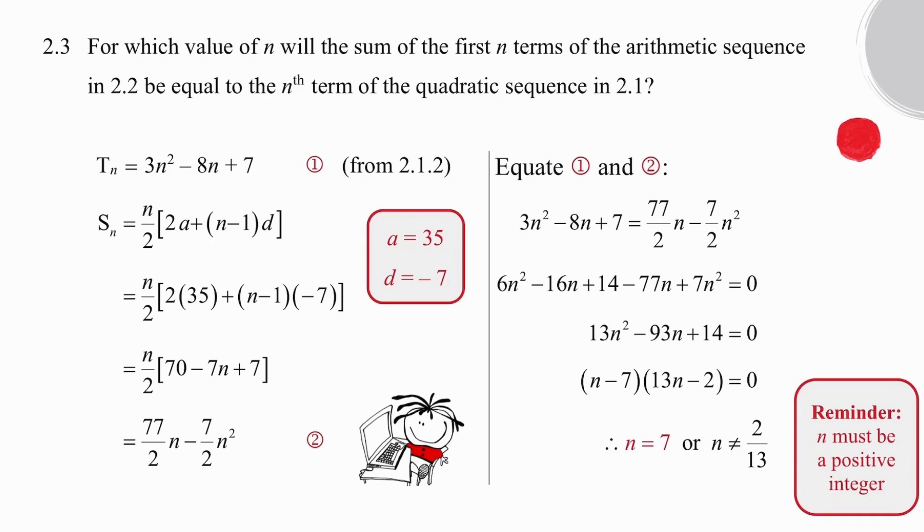Question 2.3 is a nice question because it's different. It's challenging but doable. What they want to know from us is for which value of n will the sum of the first n terms of the arithmetic sequence which we've just worked with in 2.2 equal the nth term of the quadratic sequence in 2.1. So you need to keep your head at the start. After that it's fairly manageable.